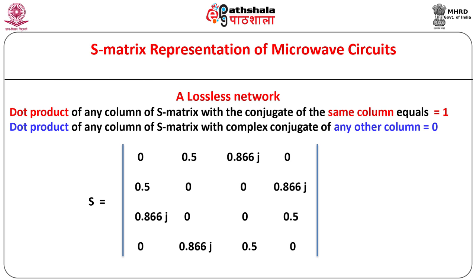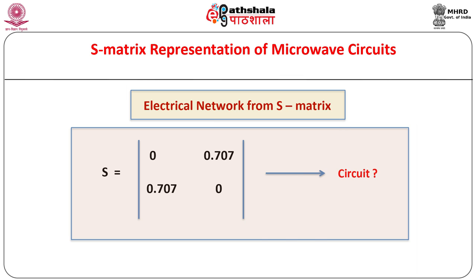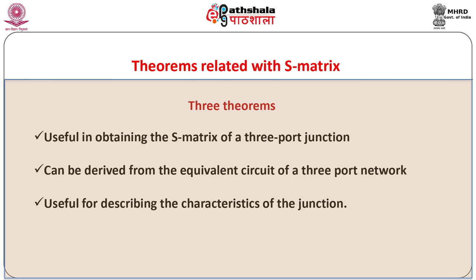Given an electrical circuit or system we can obtain its S matrix. Conversely, given an S matrix we can predict the corresponding possible circuit. As an example, consider the S matrix of a circuit as shown. The S matrix corresponds to the network as shown. What will be the S matrix of the network shown here? Mathematical analysis gives the S matrix as shown. Definitely one must know the mathematical tools and techniques for obtaining such a matrix. The knowledge about some important results and theorems related with S matrix can be highly useful for quick analysis of a given microwave circuit.